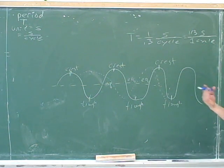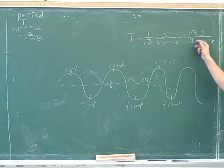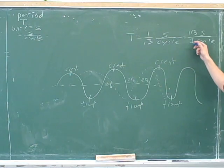And then we can interpret it the way we usually interpret a period. It tells us how much time it takes to go through 1 cycle. Well, here it takes 1/3 of a second to go through 1 cycle. Okay.